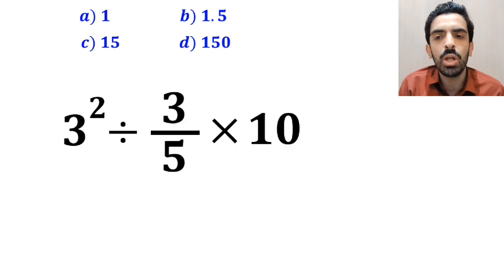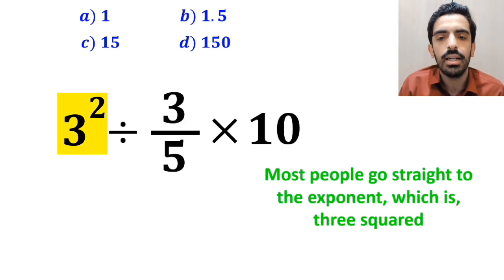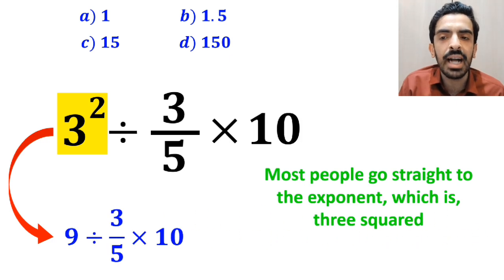And the first step to solve this question, most people go straight to the exponent, which is 3 squared, and write this expression as 9 divided by 3 over 5, then times 10.